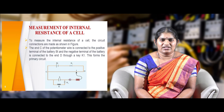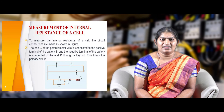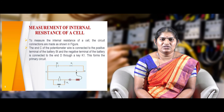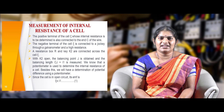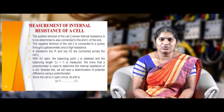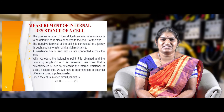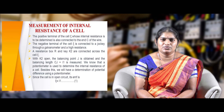The end C of the potentiometer wire is connected to the positive terminal of the battery, and the other end D is connected to the negative terminal through a key, forming the primary circuit. The positive terminal of the cell (epsilon), whose internal resistance is to be determined, is also connected to end point C. The negative terminal is connected to the jockey through galvanometer G and high resistance HR. Resistance box R and key K2 are connected across the cell. With key K2 open, the balancing point J is determined and the balancing length CJ = L1 is measured.